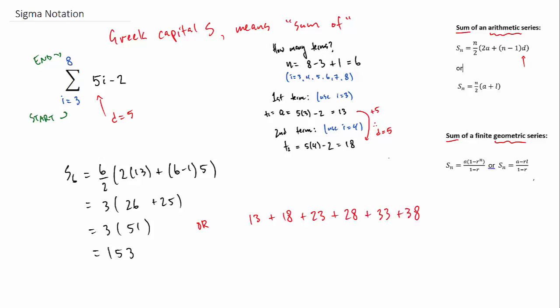So it might be helpful to look at what are we actually doing here. Really what we're doing is we're adding up those terms. So 13 plus 18 plus 23 and so on. You do that for 6 terms, going up by 5 each time. And if you type that into your calculator, it will add up to 153.